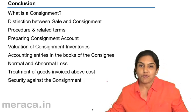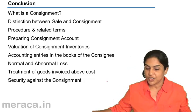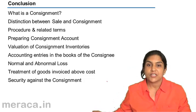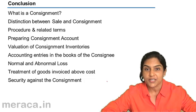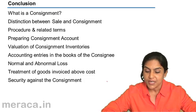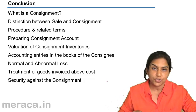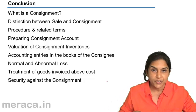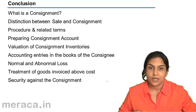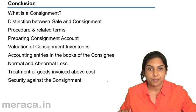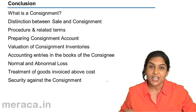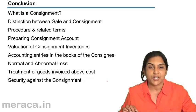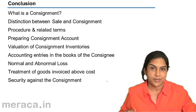A quick recap of all that we covered so far. We started off by defining a consignment — what is a consignment? Consignment is the sending of goods by one person, the consignor, to another person, the consignee, so that the consignee will sell goods on behalf of the consignor for a commission.